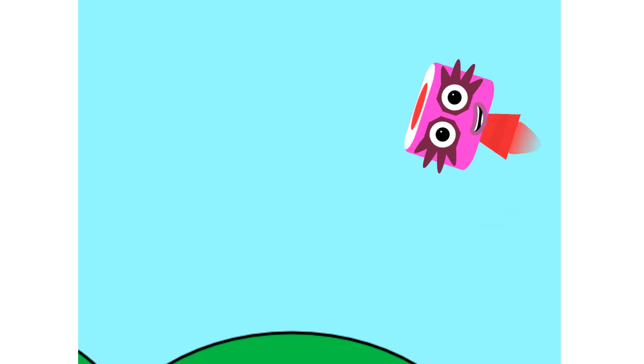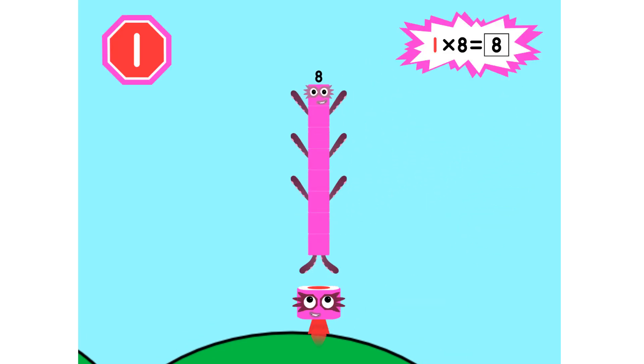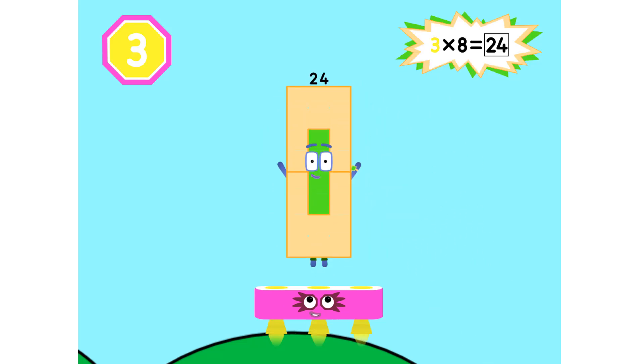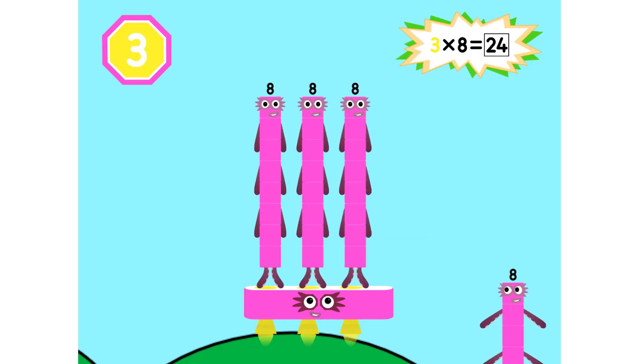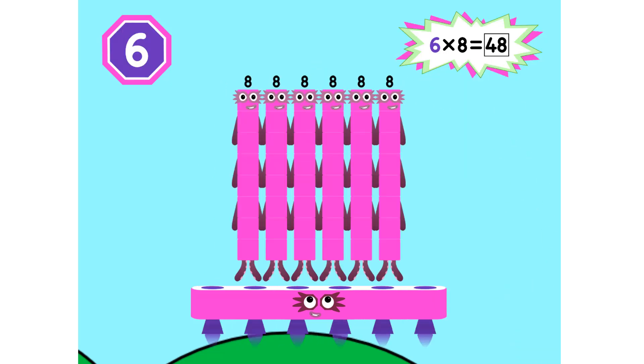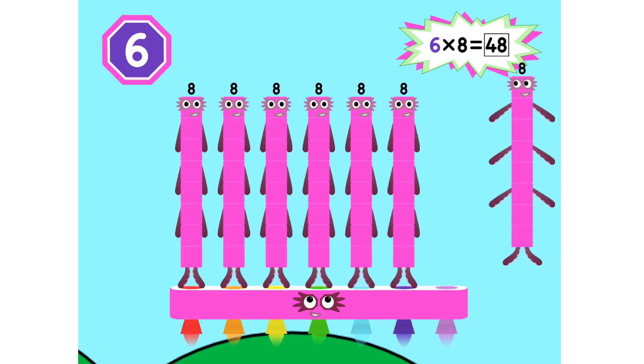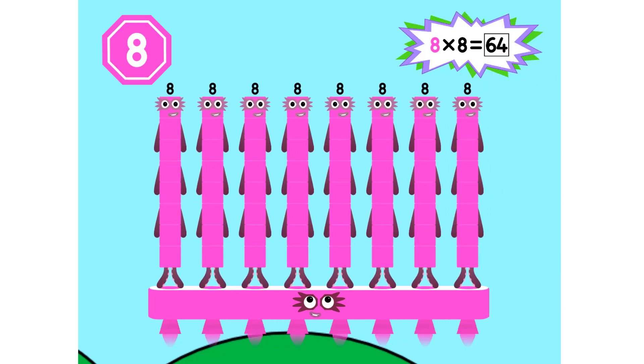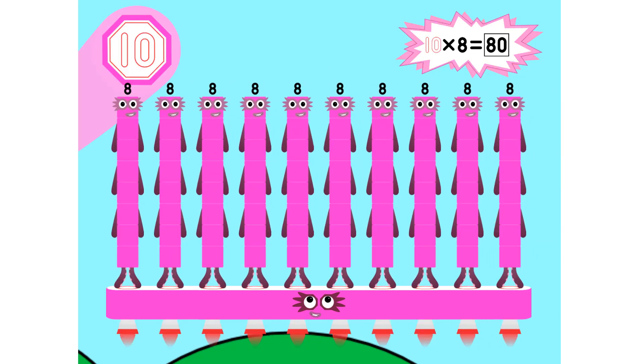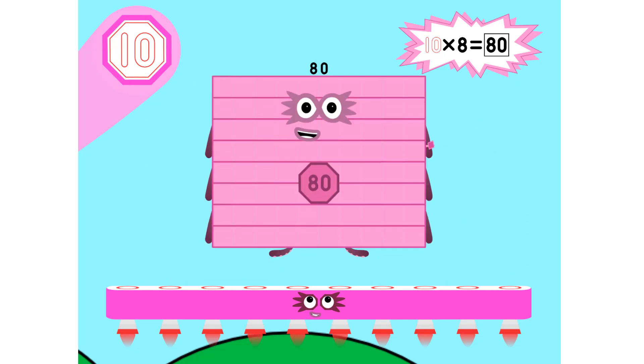Super 8s assemble! 1 eight is 8, 2 eights are 16, 3 eights are 24, we will heed the call. 4 eights are 32, 5 eights are 40, 6 eights are 48, we'll catch you when you fall. 7 eights are 56, 8 eights are 64, 9 eights are 72, here's the biggest of them all, the super 8 who has it all, 10 eights are 80.